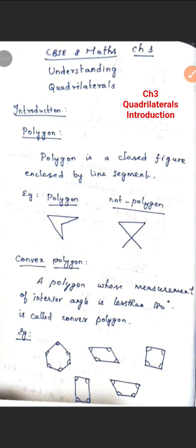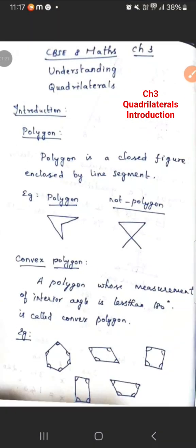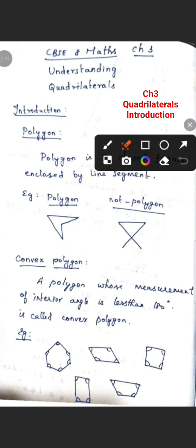In this polygon we have two types: convex polygon and concave polygon. What is a convex polygon? Simply, you have to see the diagram and see the inner angles. If the inner angle is less than 180 degrees, the polygon is a convex polygon.